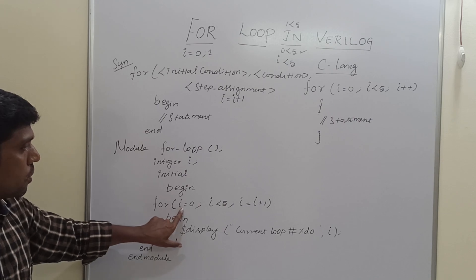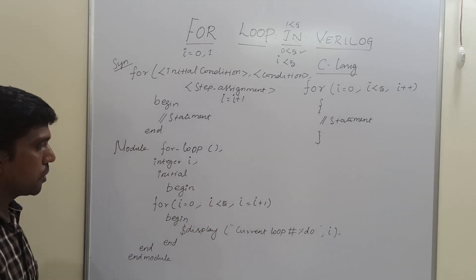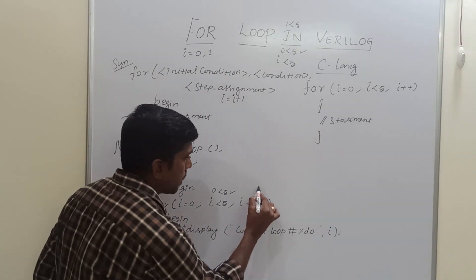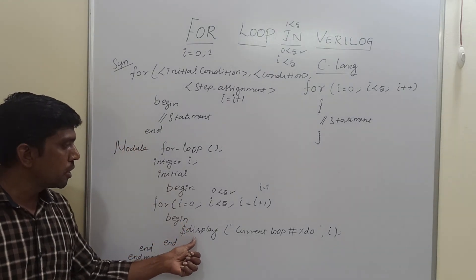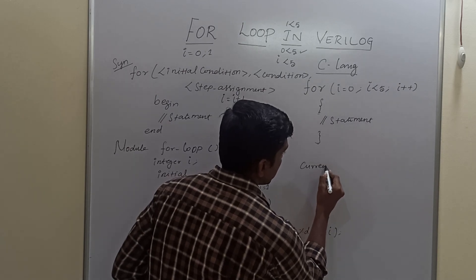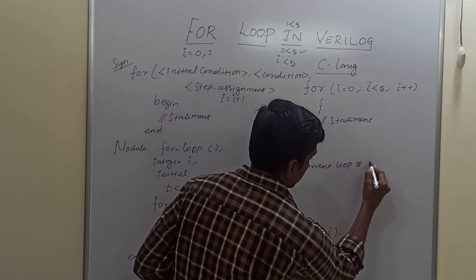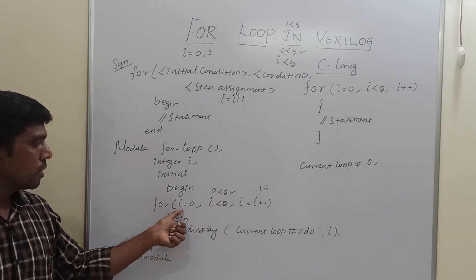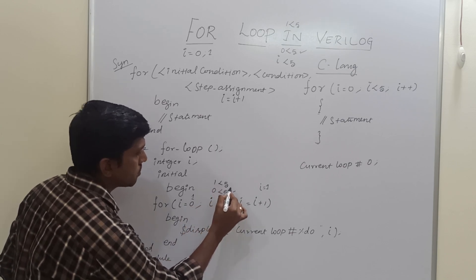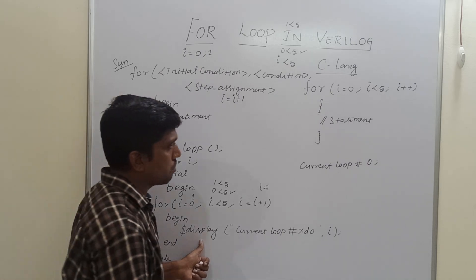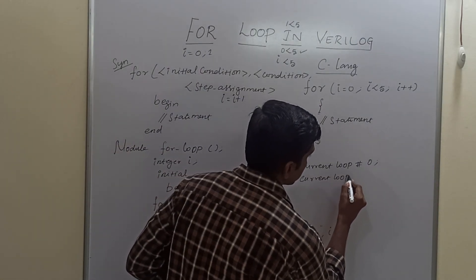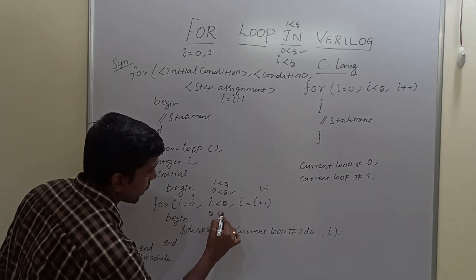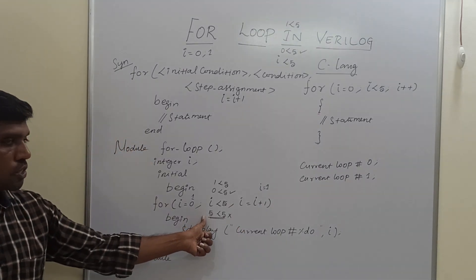In this program, the for loop condition is i = 0, i < 5, i = i + 1. Initially i is 0. Since 0 is less than 5, the condition is true, the statement executes, displaying 'current loop is 0'. Then i becomes 1. Since 1 is less than 5, the condition is still true, so it executes and displays 'current loop is 1'. This continues until i equals 5. Since 5 is not less than 5, the condition is false and the loop exits.